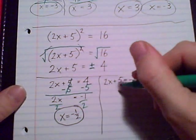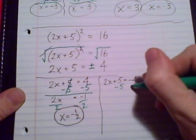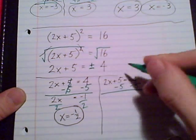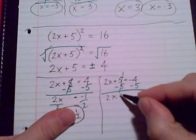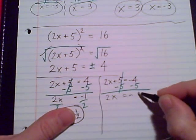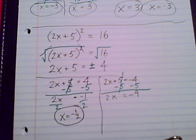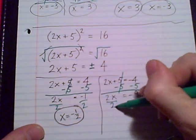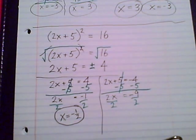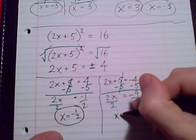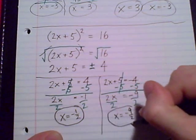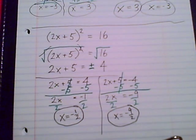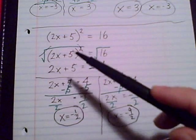The other linear equation: minus 5, minus 5, cancel that 5 off the left side, 2x equals negative 9, and then we'll divide by 2, x equals negative 9 over 2. There are two solutions and plugged in place of x it would make our equation true.